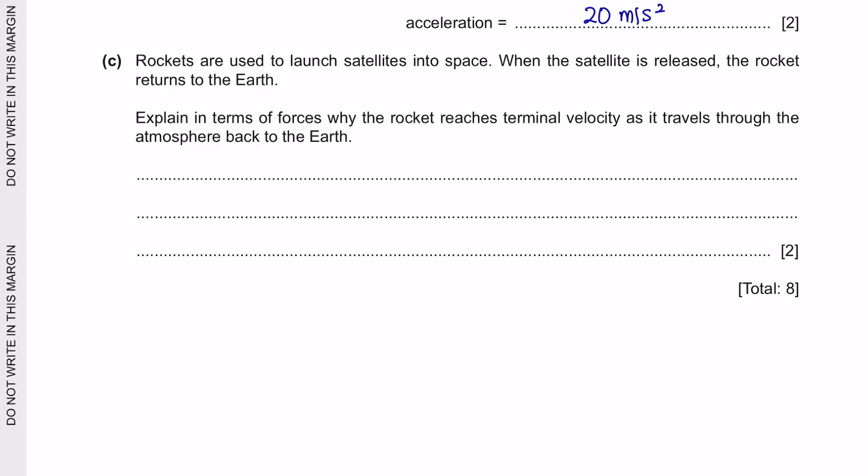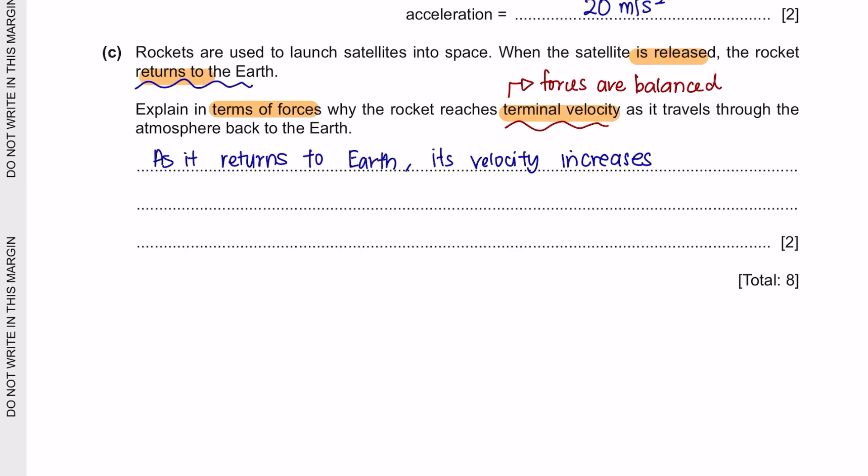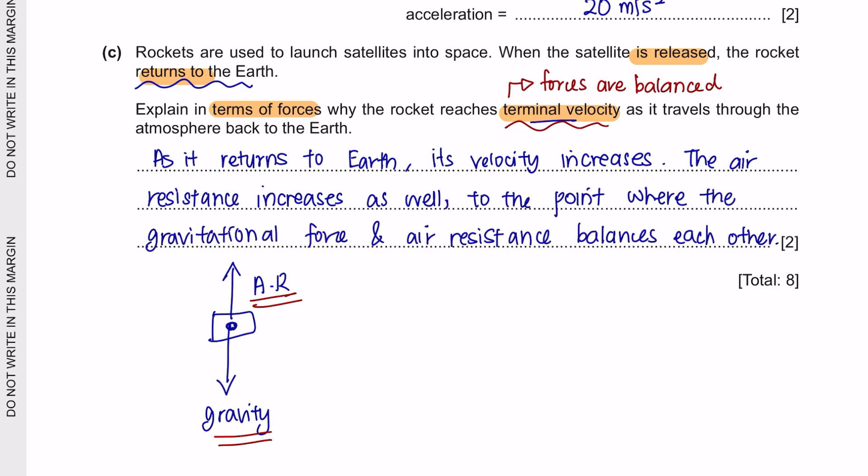Next question C. Rockets are used to launch satellites into space. When the satellite is released, the rocket returns to the earth. Explain in terms of forces why the rocket reaches terminal velocity as it travels through the atmosphere back to the earth. Terminal velocity is the point where all forces are balanced. Now as the satellite returns back to earth, due to the strong force of gravity, the velocity of the satellite will increase. If the velocity increases, the air resistance increases as well. So when an object is falling or being pulled due to the force of gravity, there will always be an opposite force. In this case, it's the air resistance. So this happens to a point where the air resistance and the gravitational force balances out each other, and this is the point where we refer as terminal velocity.